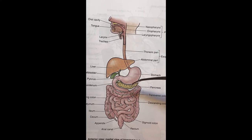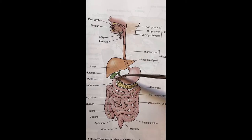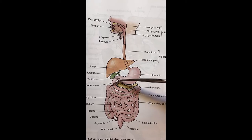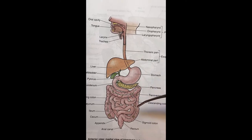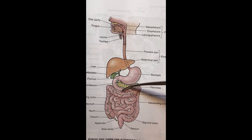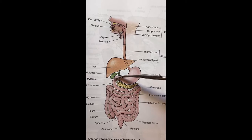That duct is the cystic duct. Underneath the stomach on the left is the pancreas. The stomach will turn into the small intestines. The first part off of the stomach is the duodenum — you can see it leaves the pyloric region and goes through the pyloric sphincter.